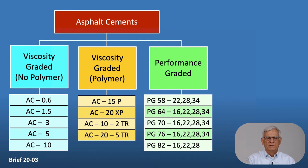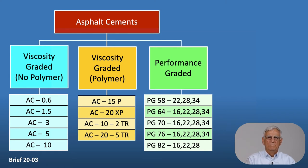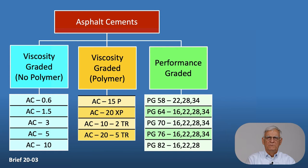As you get increases in numbers, the viscosity or stiffness of that binder is greater at 140 degrees Fahrenheit. Polymer designations start out with AC for asphalt cement, then the letter P to indicate polymer and the letters TR if they have tire rubber. Under performance graded, we have PGs or performance graded asphalts. A very popular binder used for hot mix applications in Texas is a PG 70-22 or a 70-28. PG 64-22s are also used for a variety of uses.